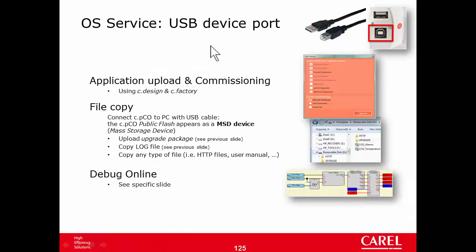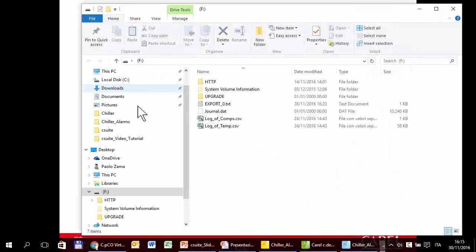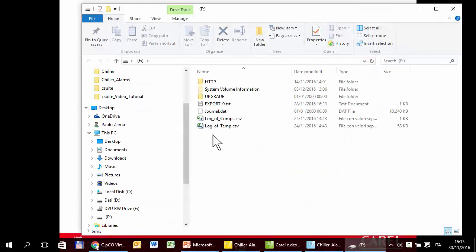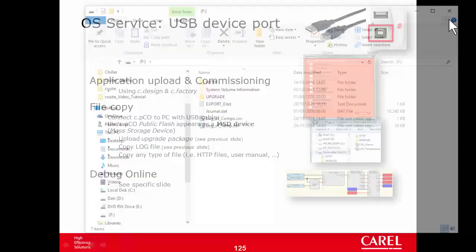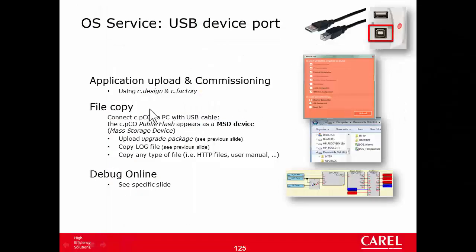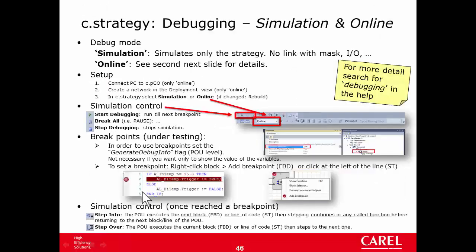The USB device port lets you connect the CPU to a PC to upload the application using C-Factory, view the internal memory as a disk, and use the connection for online debug, as seen in slide 46.